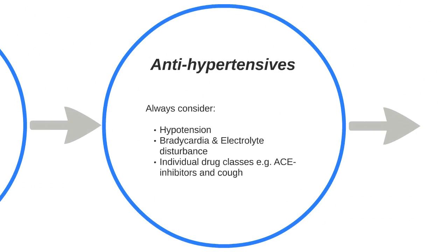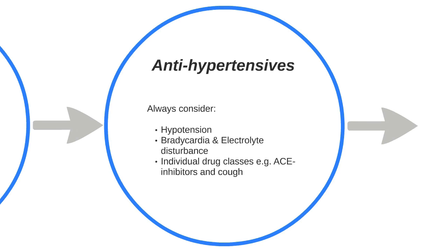Finally we come to antihypertensives. If a patient is taking antihypertensives, you should consider whether these are appropriate to continue. For example, you may wish to stop any antihypertensive agents in the presence of hypotension, bradycardia or any electrolyte disturbance. An excellent example of this would be a patient with acute renal failure and an associated hyperkalaemia who is taking an ACE inhibitor.